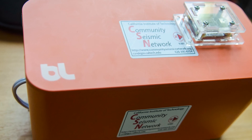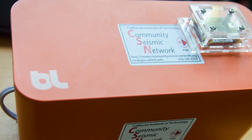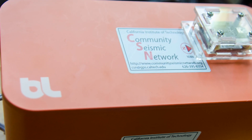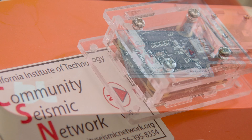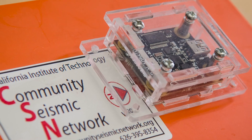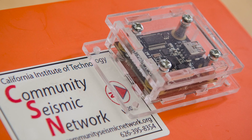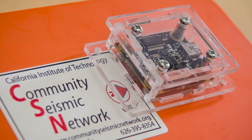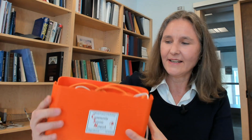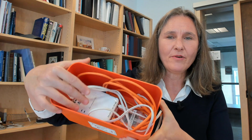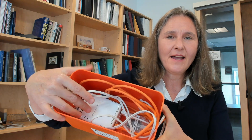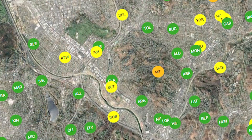The Community Seismic Network is made up of accelerometers — seismometers that record acceleration. This is just one of our seismometers, and if you look inside you can see we have a processor and a circuit board which has the sensor on it.